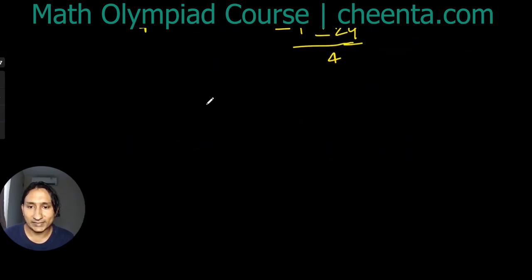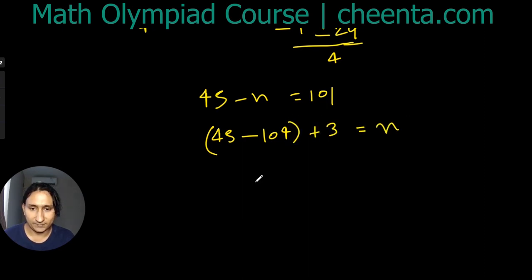And there is more actually. Note that we have 4S - n = 101, so 4S - 104 + 3 = n, and this part is a multiple of 4. So n when divided by 4 leaves remainder 3. So the only possible values of n are actually 3 and 7. n has to be one of these two.